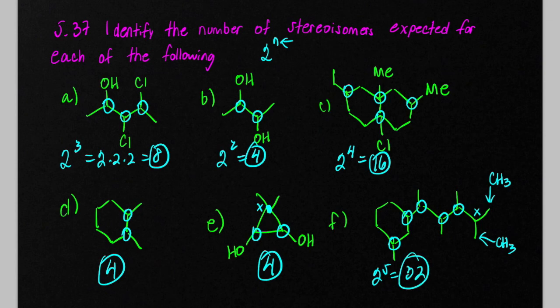Okay, so count the stereocenters and calculate 2 to the nth. That's the maximum number you would expect. Yes, some of them could be meso or have weird structures that cause that total number of stereoisomers to be less, but 2 to the nth is kind of the first thing you do to calculate.